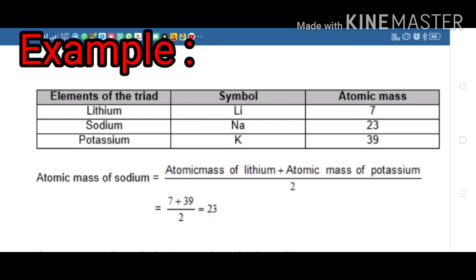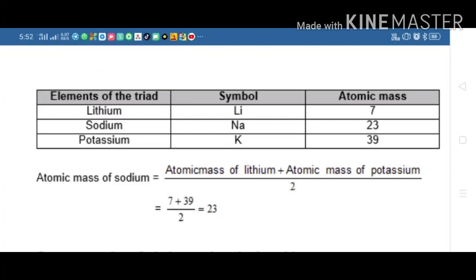Dobereiner found the arithmetic mean of the first and last element. So here, 7 plus 39 upon 2 equals 23, which means it is equal to the atomic mass of the middle element, that is sodium.